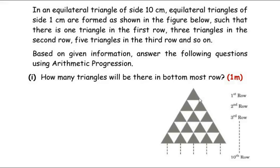So here we have been given a big equilateral triangle whose side length is 10 cm, so all sides are 10 cm. Within this big triangle, small equilateral triangles of 1 cm are placed such that the first row has 1 triangle, the second row has 3 triangles, the third row has 5 triangles, and it goes on. We need to find how many triangles will be in the bottommost row.